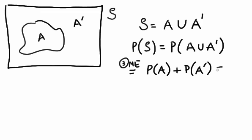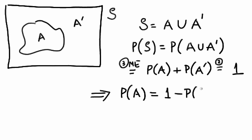And then we know by the second axiom that the probability of the sample space is 1. Now all we need to do is subtract the probability of A complement from both sides, and we get the probability of A equals 1 minus the probability of A complement. And that was what we were trying to prove.